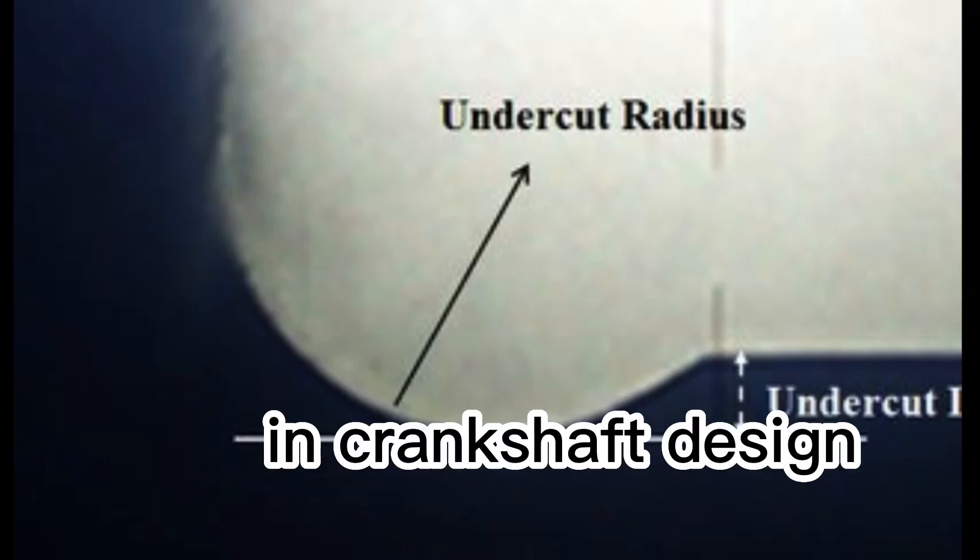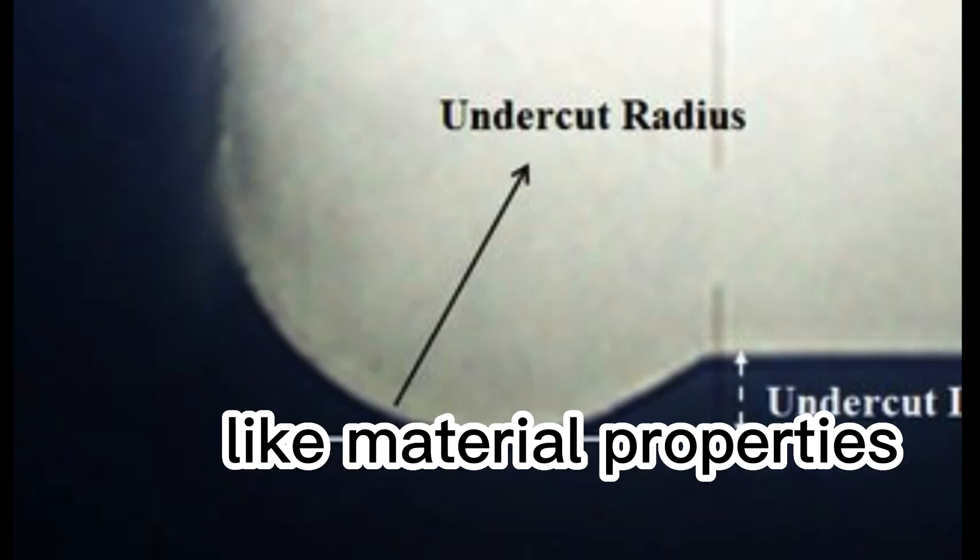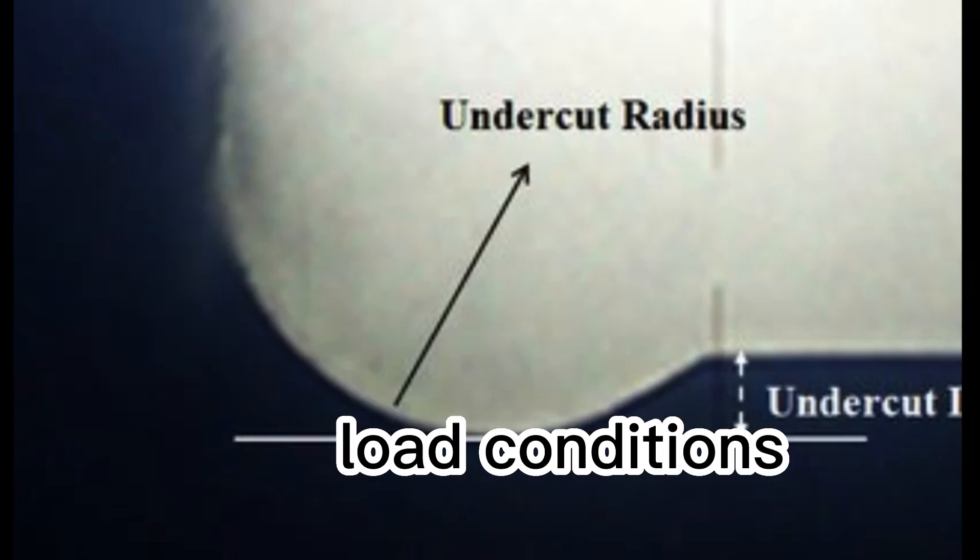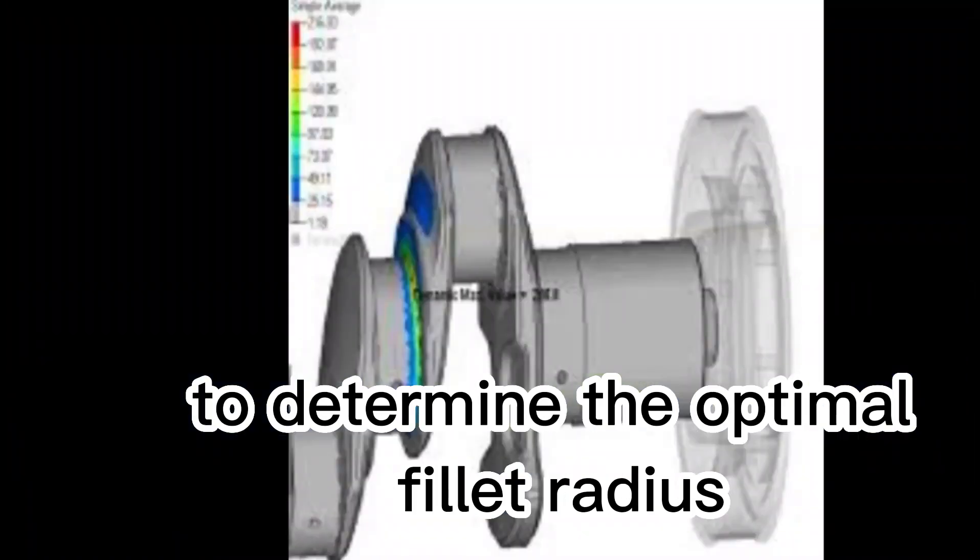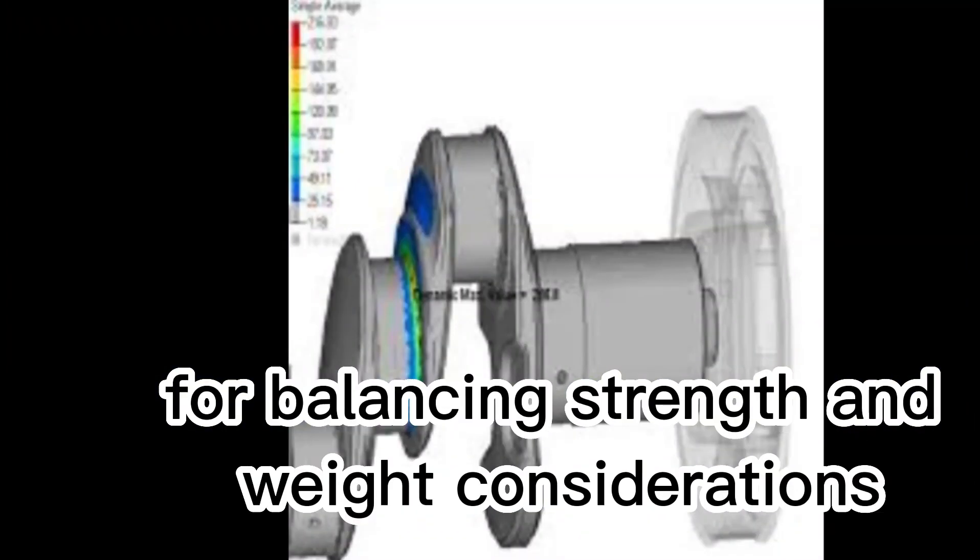In crankshaft design, engineers carefully consider factors like material properties, load conditions, and manufacturing processes to determine the optimal fillet radius for balancing strength and weight considerations.